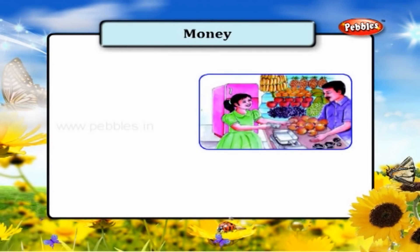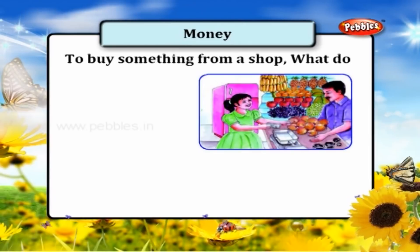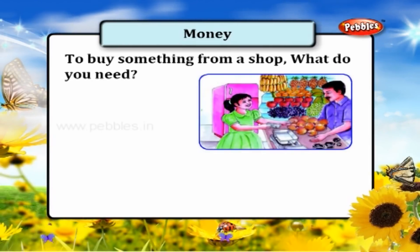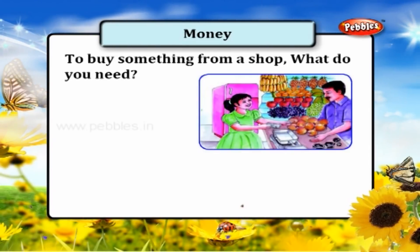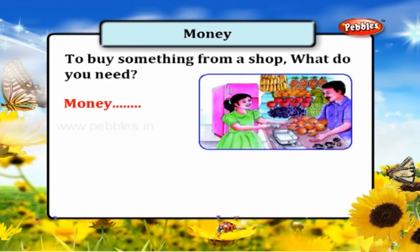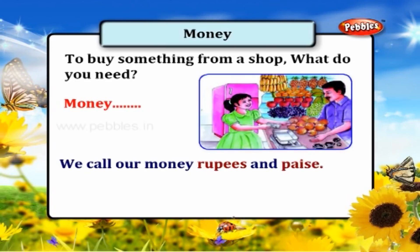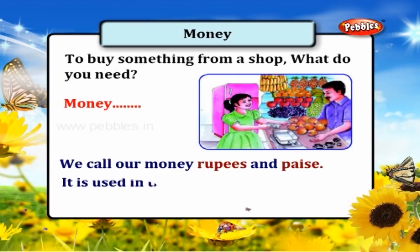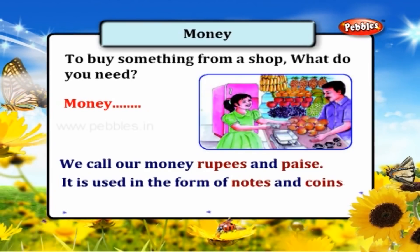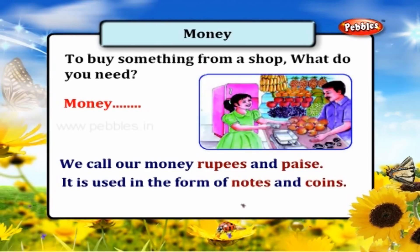To buy something from a shop, what do you need? Yes, we need money. We call our money rupees and paisa. It is used in the form of notes and coins.